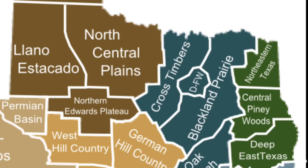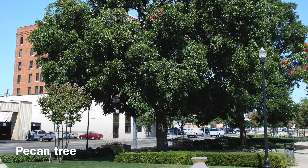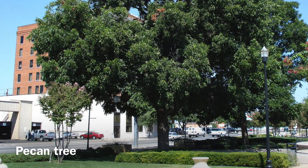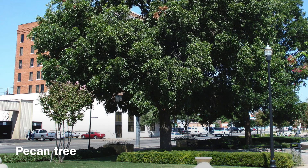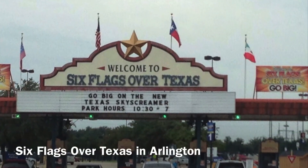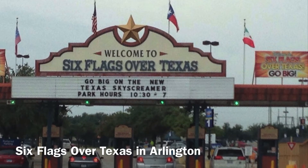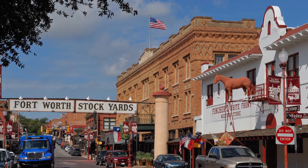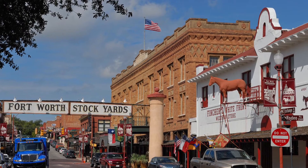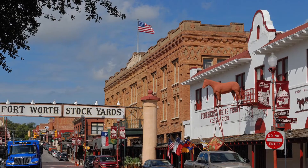Continuing to move east within the North Central Plains, we come across the Cross Timbers and the Grand Prairie. The Cross Timbers was a heavily forested area with a plain between them known as the Grand Prairie. In the Cross Timbers, the timber industry was a main part of the economy, using native trees such as live oaks and pecans for lumber early in Texas history. Now most of this region has become farming and ranching, with cities such as Brownwood and Arlington.